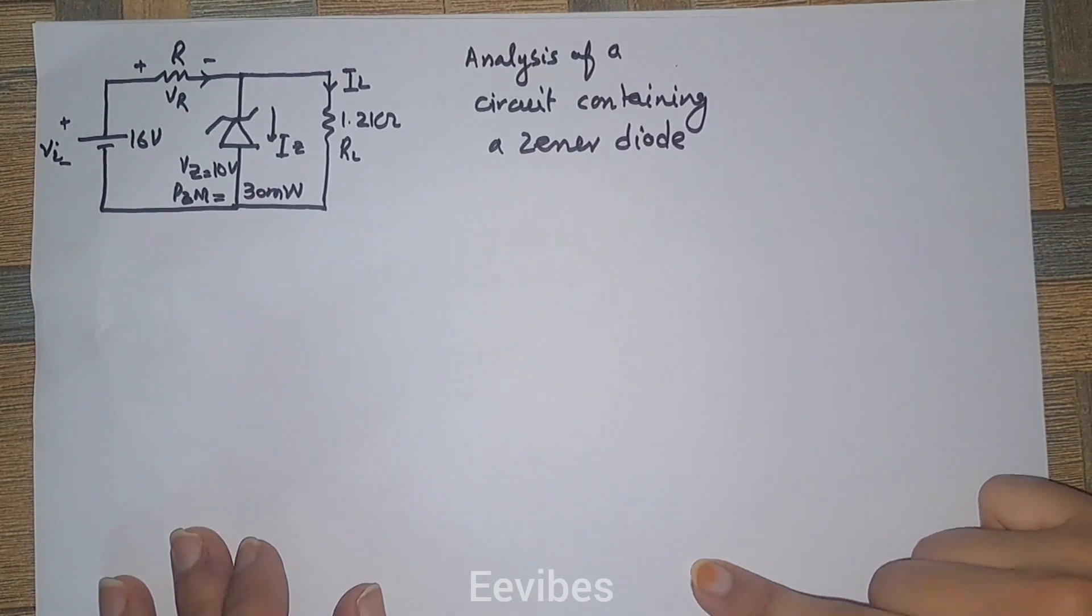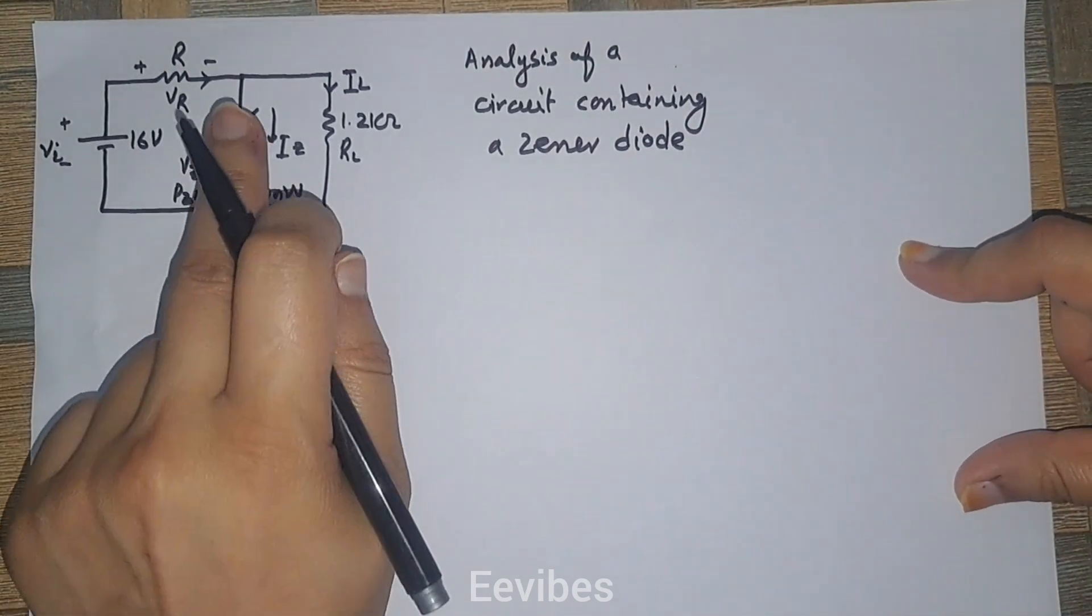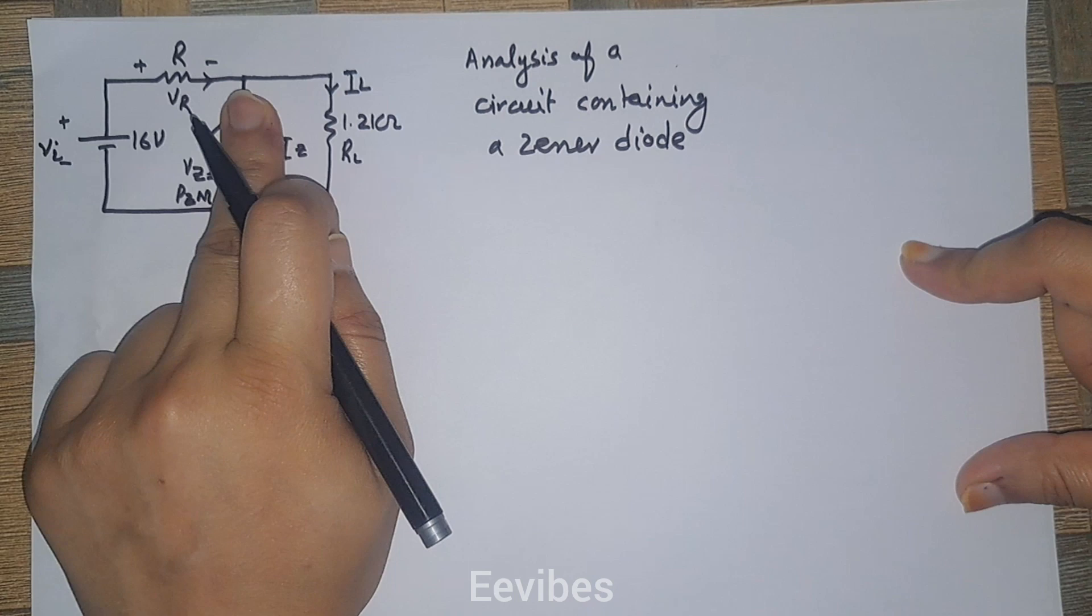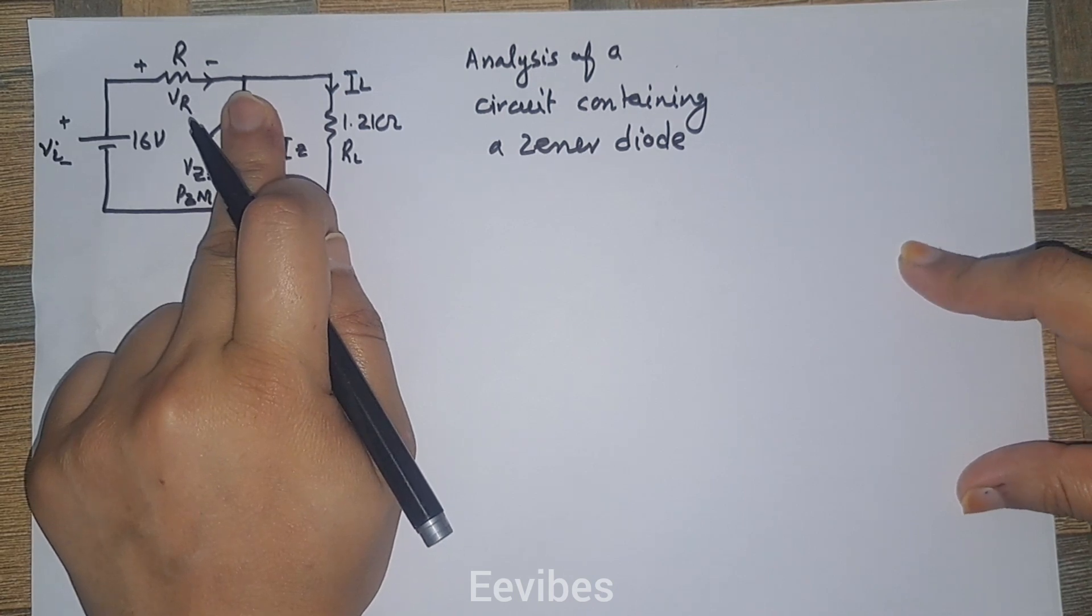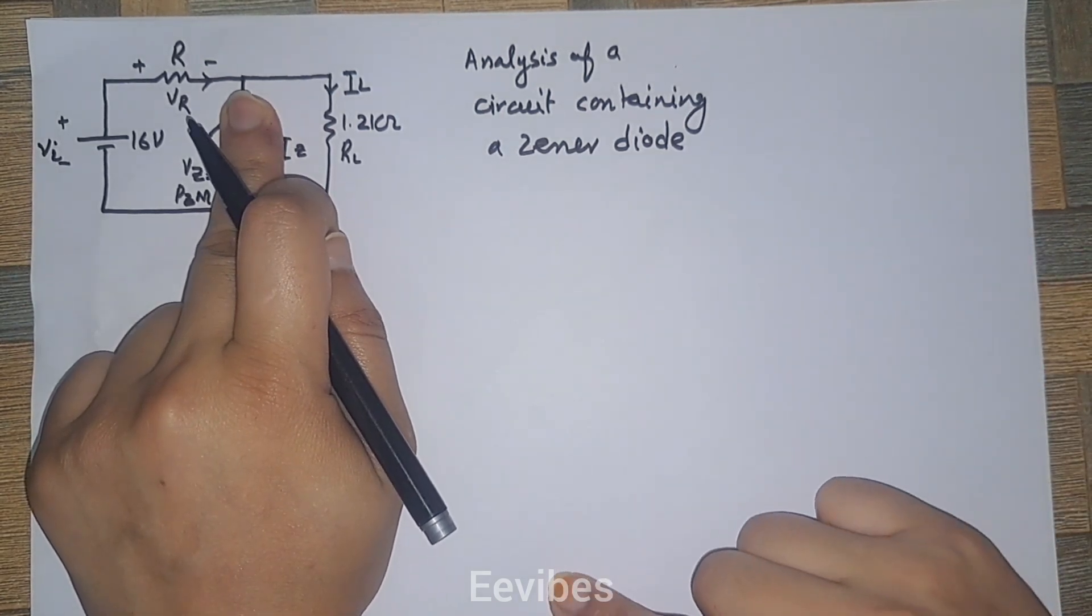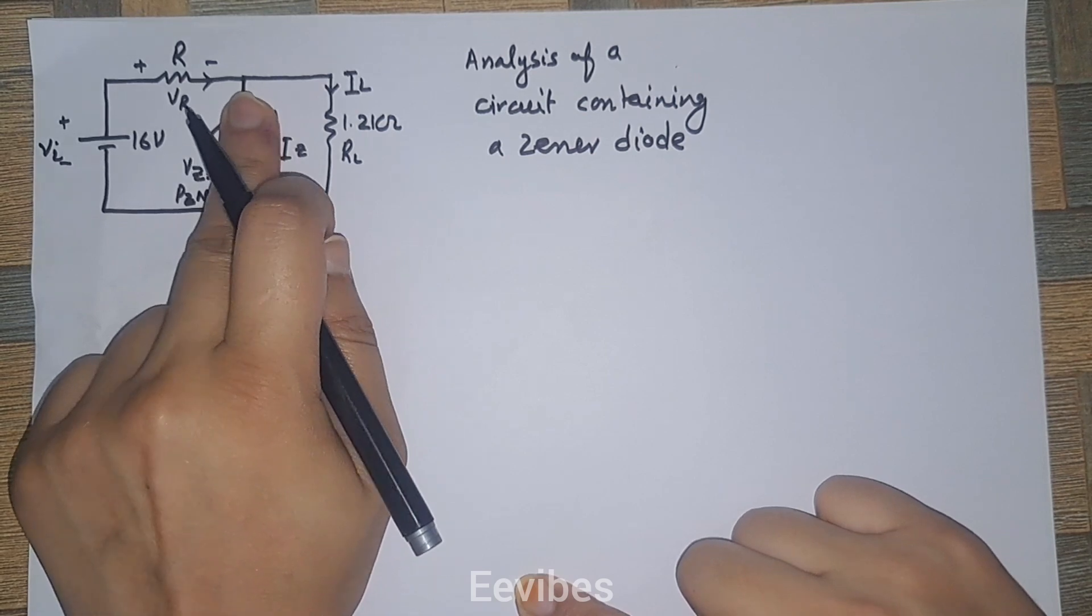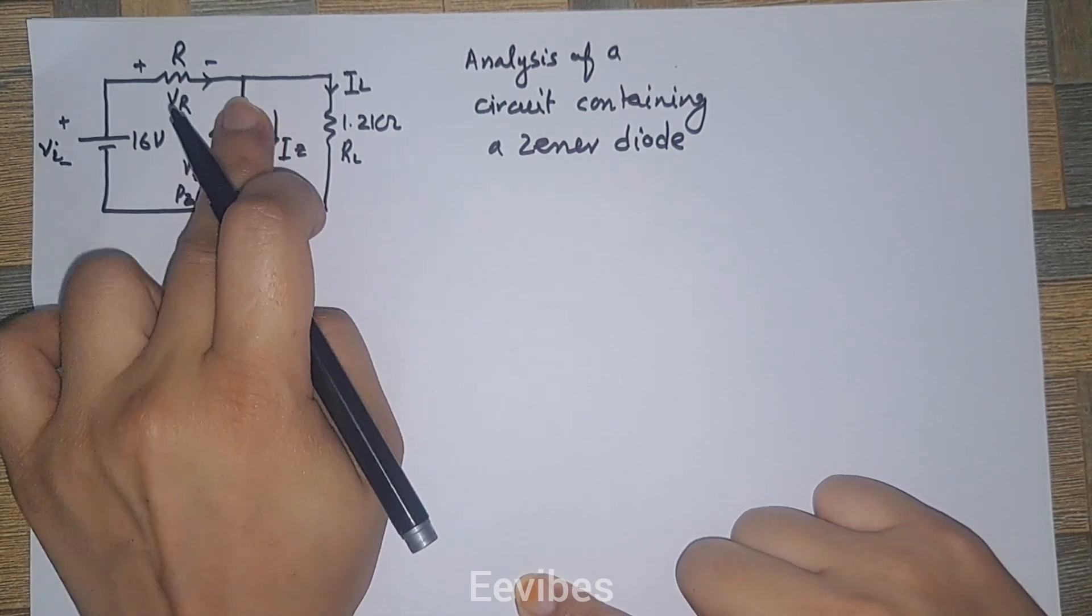Whenever we have this type of condition, the first step is to ignore the zener diode present in the circuitry and consider the rest of the components.